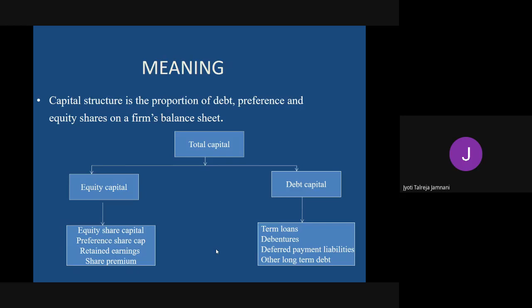Preference share capital is issued to those people whom the company prefers. Those shares are not issued to the general public - they are issued only to a few preferred people. Preference shareholders give money and buy these shares, but they don't have voting rights and are not considered owners of the company.